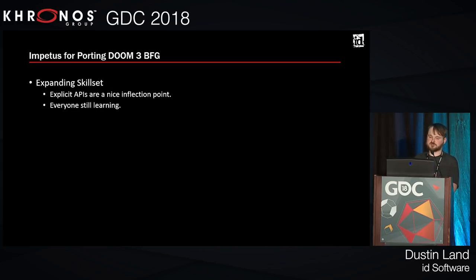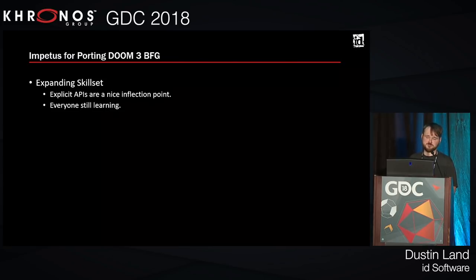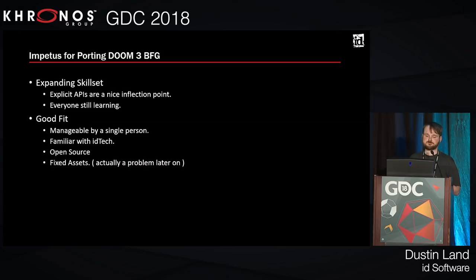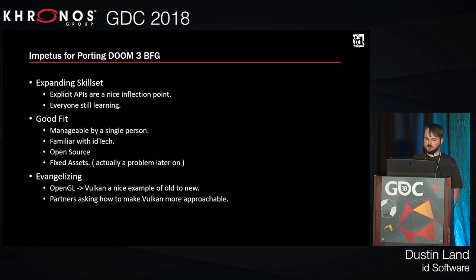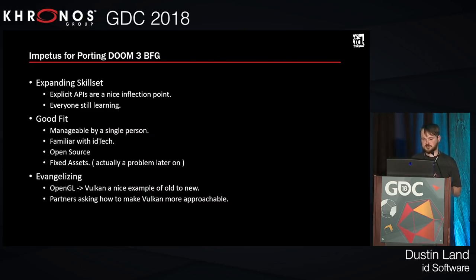My personal reasons for doing the port were expanding my skill set. Explicit APIs are a nice inflection point in graphics right now because it's a new paradigm with a lot of shifting around. If you've been looking to add it to your skill set, now's a good time — there's a lot of opportunity, and that opportunity won't be around forever because everybody's catching up. It was a good fit for me personally: it compiles in seconds instead of minutes, familiar tech idioms, no red tape with open source, and fixed assets — I didn't have to open Photoshop or a modeler. The last part was just evangelizing, since we were early out. We wanted to put out examples of what it was like to go from a renowned legacy OpenGL renderer to a modern Vulkan one, and we also had partners asking how to make Vulkan more approachable.